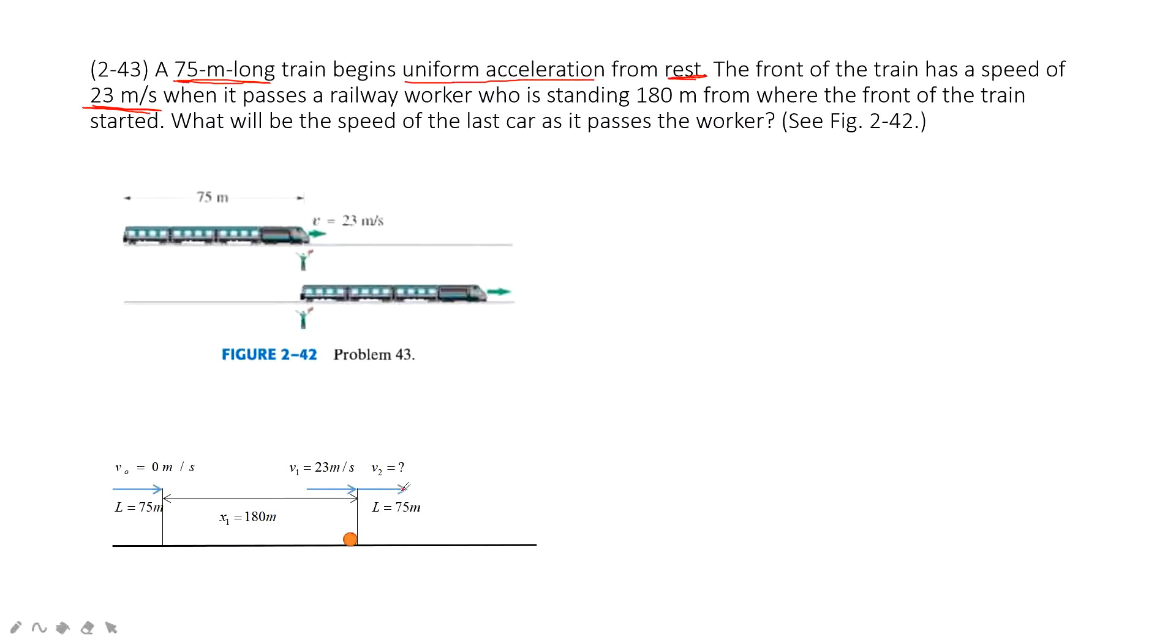And then ask you what's the velocity of the last car as it passes the worker. So the last car as it passes the worker, that means the tail of the train just matches with the worker. Do you agree? So in this case, we understand what happens.